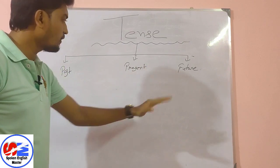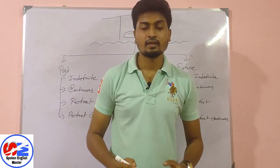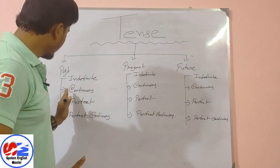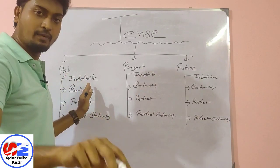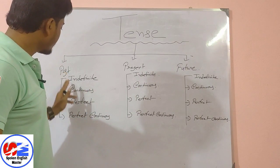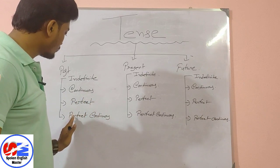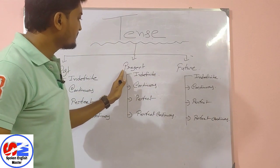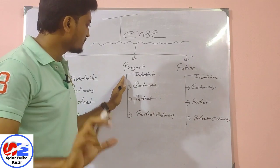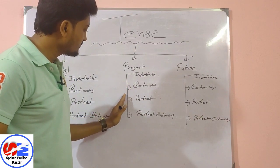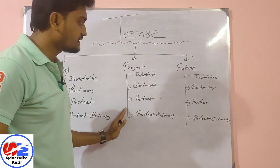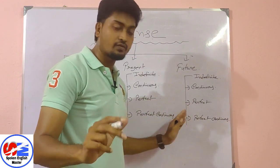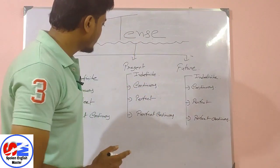I have written each and every part. In case of past tense we have: past indefinite tense (or simple past tense), past continuous tense, past perfect tense, and past perfect continuous tense. Next, present tense has: present indefinite tense (or simple present tense), present continuous tense, present perfect tense, and present perfect continuous tense. Similarly, future tense has: future indefinite tense, future continuous tense, future perfect tense, and future perfect continuous tense.